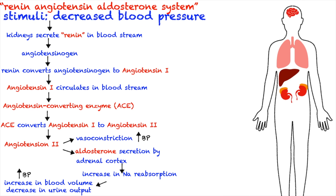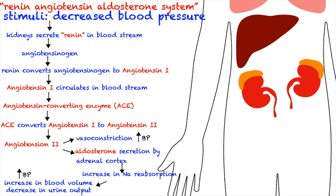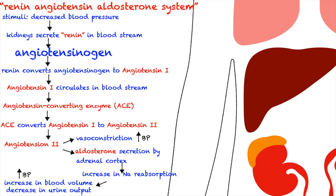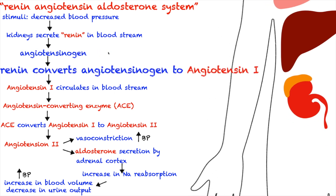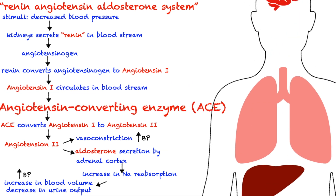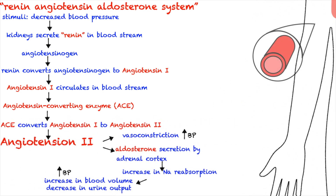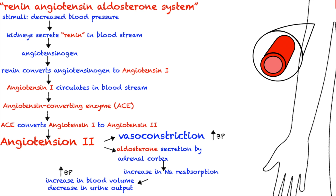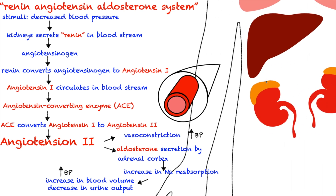Let's review. Everything starts with a decrease in blood pressure, which is perceived by the sympathetic nervous system and the kidneys. The kidneys then secrete renin into the bloodstream. Renin converts angiotensinogen to angiotensin I. Angiotensin I circulates in the bloodstream until it reaches the capillaries of the lungs where ACE is present. ACE converts angiotensin I to angiotensin II. Angiotensin II then increases blood pressure in two ways: vasoconstriction, which constricts blood vessels and raises blood pressure; and the secretion of aldosterone by the adrenal cortex, which causes an increase in sodium reabsorption within the kidneys, followed by water, resulting in increased blood volume and decreased urinary output, which ultimately also causes blood pressure to go up.